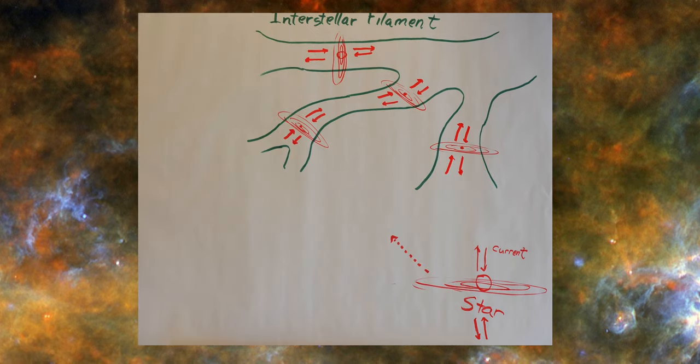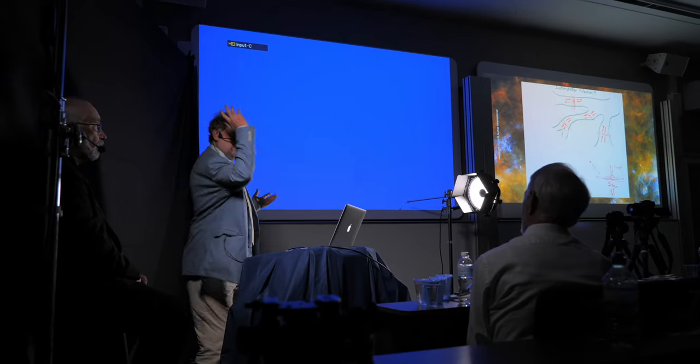Before the advent of the Herschel and Planck space telescopes, we honestly believed that the stars were randomly distributed in the sky. We believed that, right? And then, once you see the filaments, every star we see in the sky is on a filament. There's no randomness to it if you can see the underlying structure behind it.